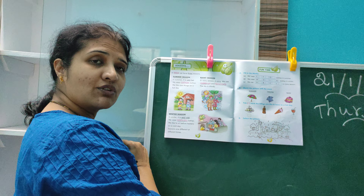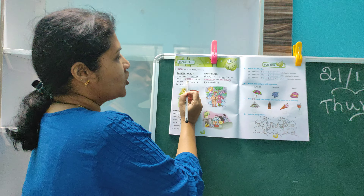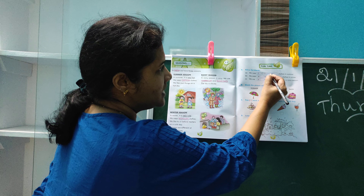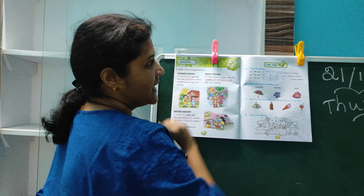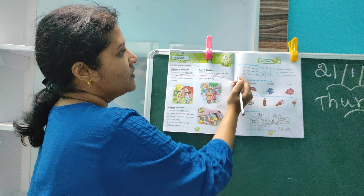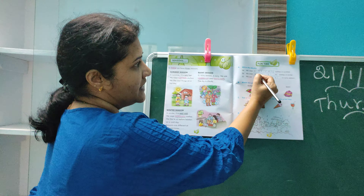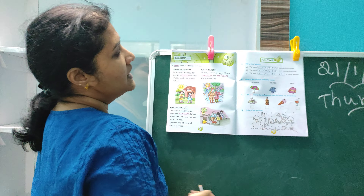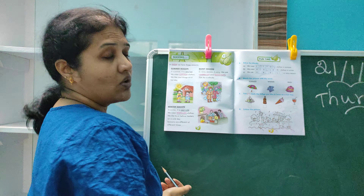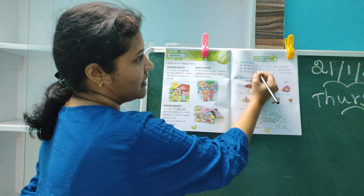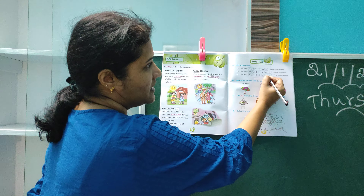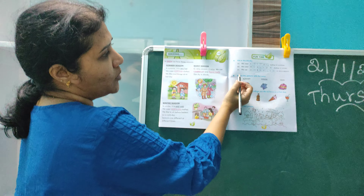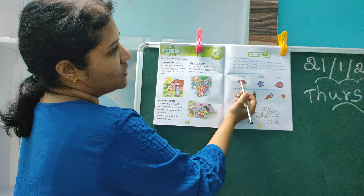Now let's see the fun time activity. We wear blank clothes in summer. What kind of clothes do we wear in summer? We wear cotton clothes in summer. What is the spelling of cotton? C-O-T-T-O-N. Cotton. We wear woolen clothes in winter — W-O-O-L-E-N. And we use blank in rainy season. What do you use in rainy season? Umbrella, right? U-M-B-R-E-L-L-A. Umbrella.